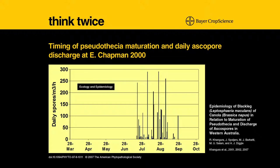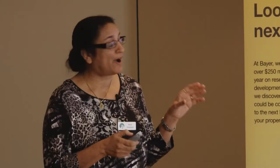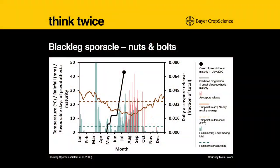These are the peaks of ascospore discharge on a daily basis. We found two major driving factors for this process: temperature and rainfall. As soon as the temperature dropped below 22°C and there had been 4 millimeters of rain in the past week, that drives the whole process — that's when Pseudothecia start maturing. We need 43 favorable days. Every day counts as a favorable day when temperature is below 22°C and rainfall over the past week is 4 millimeters or above — that is the threshold. Once that process is completed, spores will start discharging.